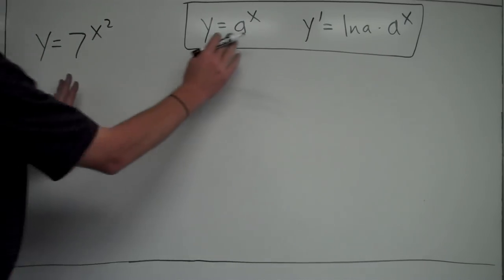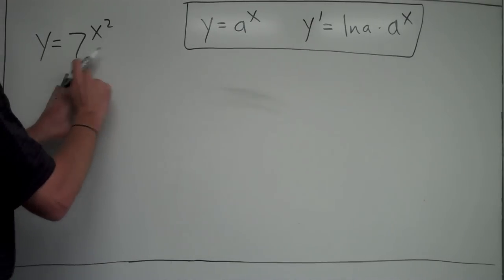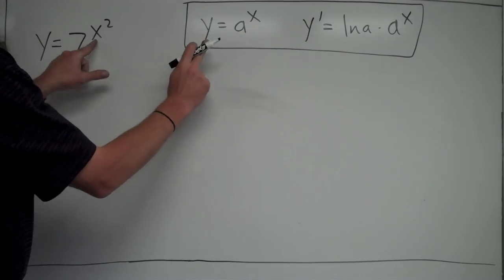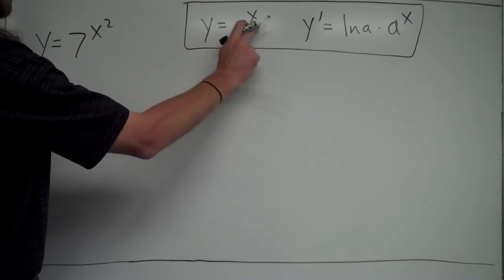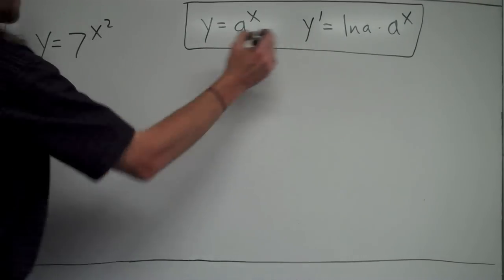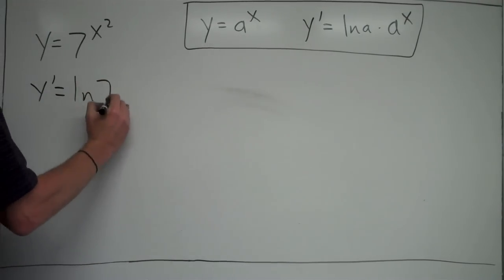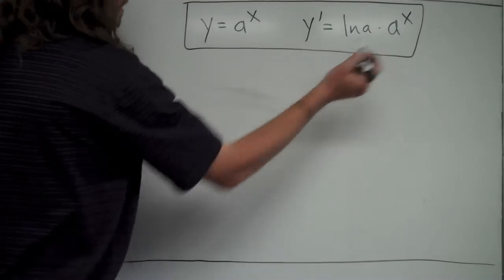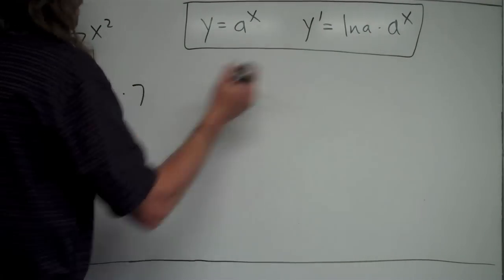Now, I can look and I can still apply things here because I have 7 is in the spot where a is and x squared is in the spot where x is. So initially, everything's going to be the same. If I want to find the derivative of this, it's just going to be natural log of 7 times, a is 7. The x in this case is x squared.